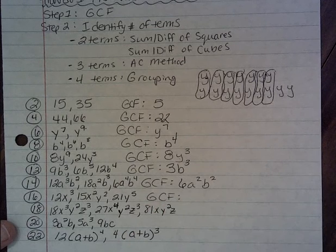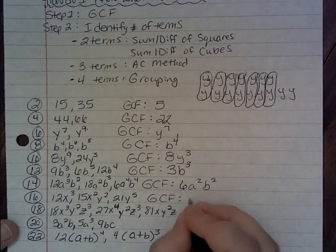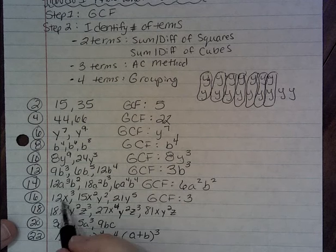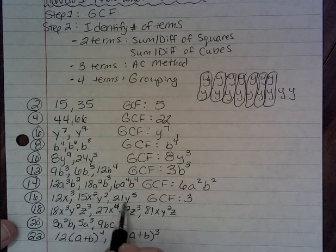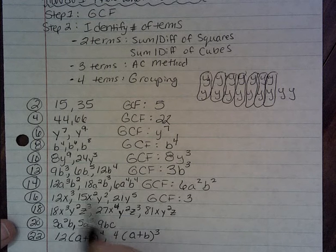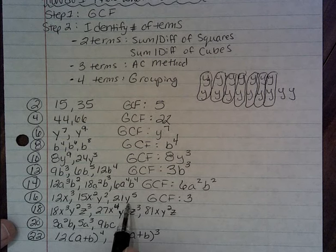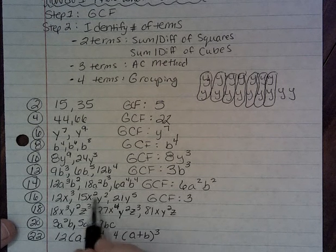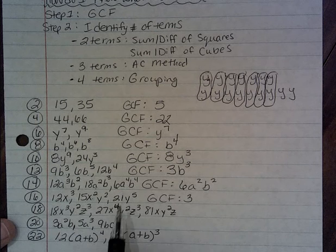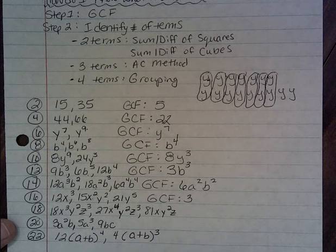Greatest common factor on number 16: I've got 12, 15, and 21 — the biggest number that goes into all of them is 3. Looking at the x's: I've got x to the 3rd, x squared, and then no x's in the last term, so we can't take any x's out. Same with y's — there's no y in the last term. Remember, you have to be able to take it out from all three terms. So the greatest common factor for number 16 is just 3.